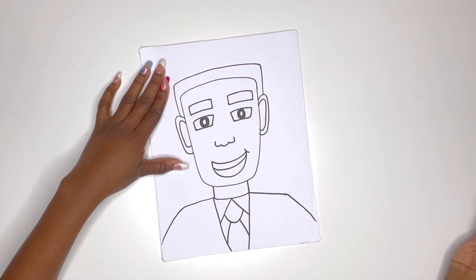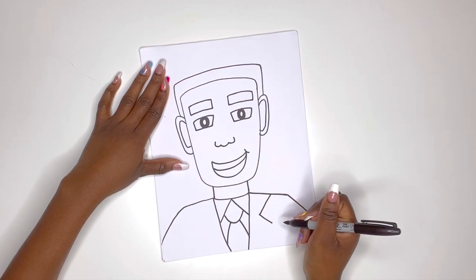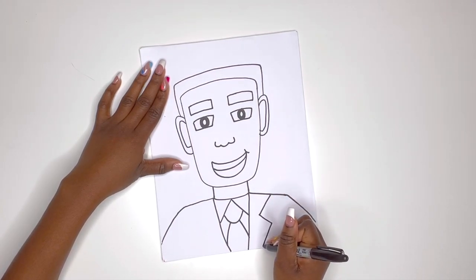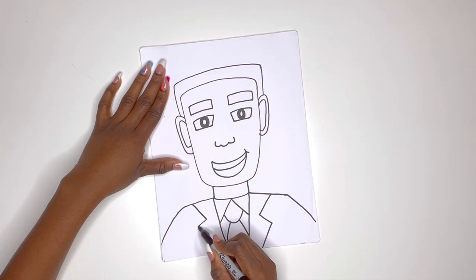And there you have his tie. And now just add some angled lines on the side to finish off his